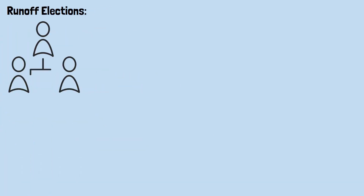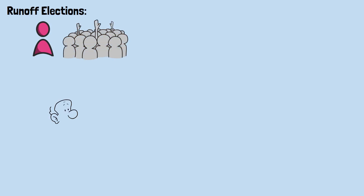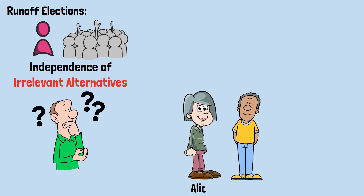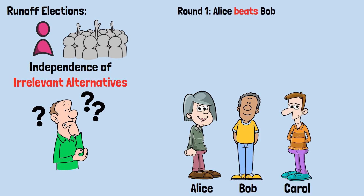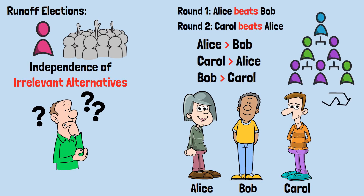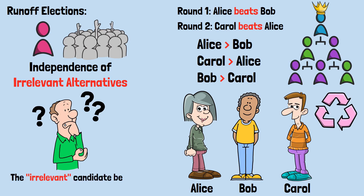Runoff elections — eliminate the lowest candidate and revote, keep going until someone has a majority — also violate independence of irrelevant alternatives. Here's a paradox: imagine Alice beats Bob in the first round, then they face Carol in round two, but Carol beats Alice. So we have a cycle: Alice beats Bob, Carol beats Alice, but also Bob beats Carol. The order you eliminate candidates matters — change the order, change the winner. The irrelevant candidate being eliminated first versus second changes the outcome.